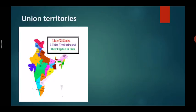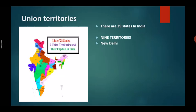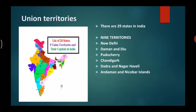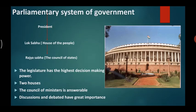In India, there is a union government, 29 states, and 9 union territories. The union government controls the union territories. There are 9 union territories, one of which is New Delhi.